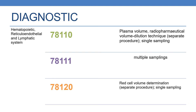The next code is 78110, which deals with plasma volume, radiopharmaceutical volume dilution technique, separate procedure, single sampling. The next code is 78111, which deals with plasma volume, radiopharmaceutical volume dilution technique, multiple sampling.